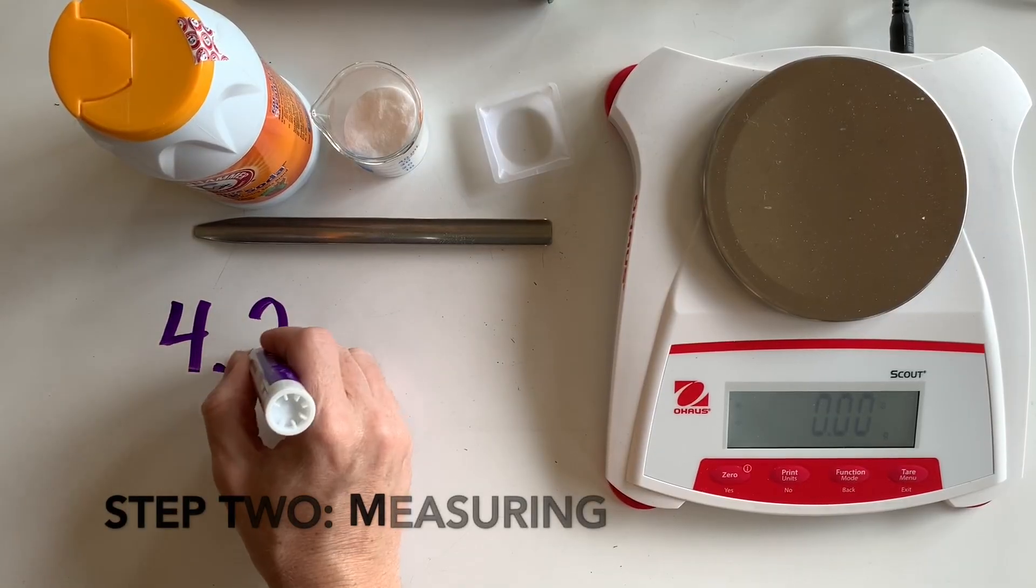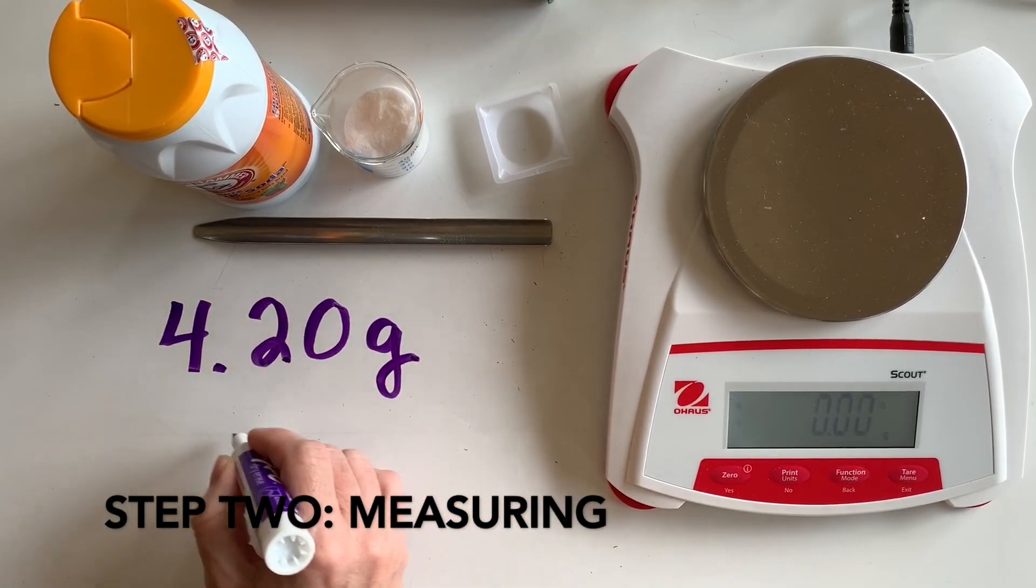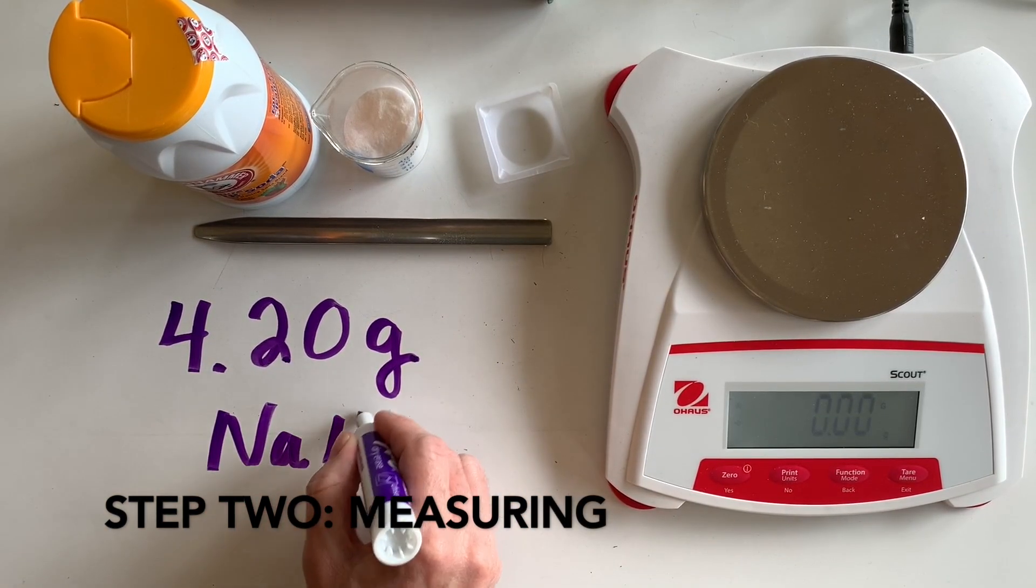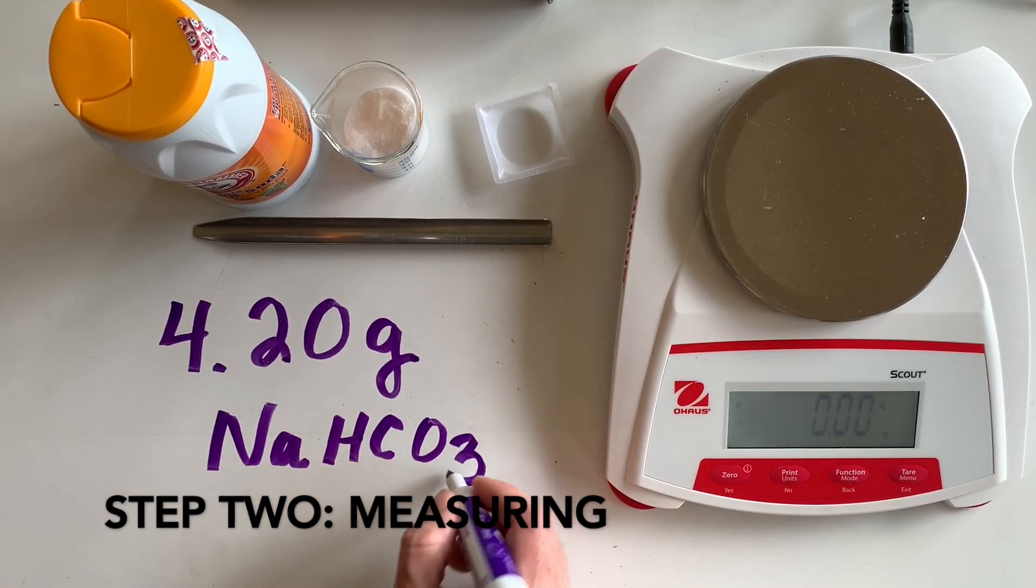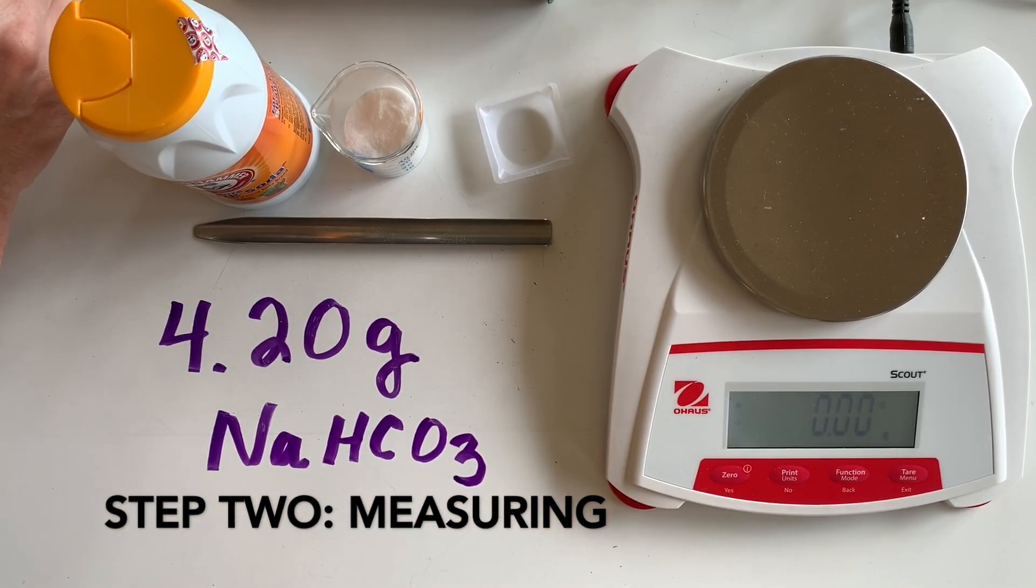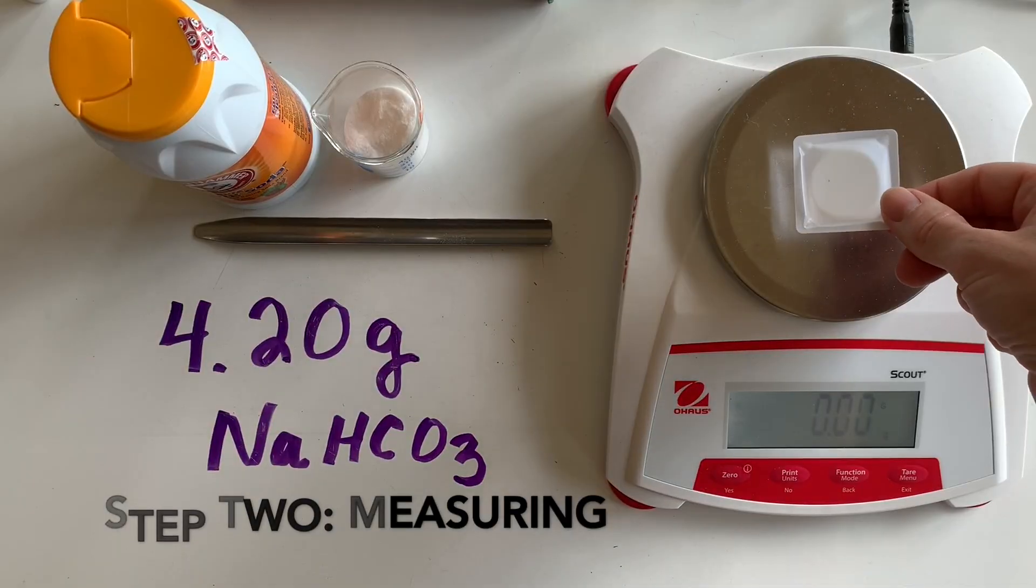The next step in making a solution from a solid is massing out that exact mass that you calculated in your stoichiometry step. In this case, it's that 4.2 grams of sodium bicarbonate.